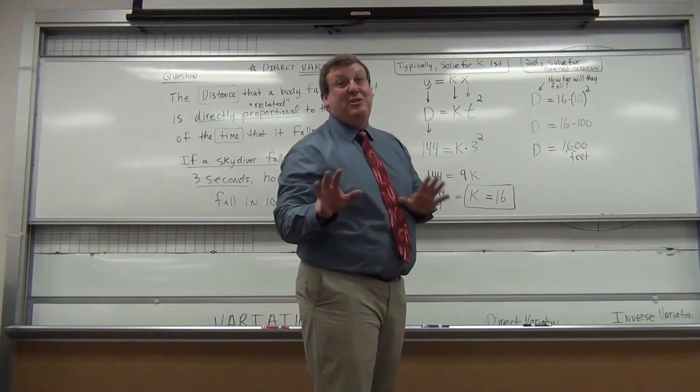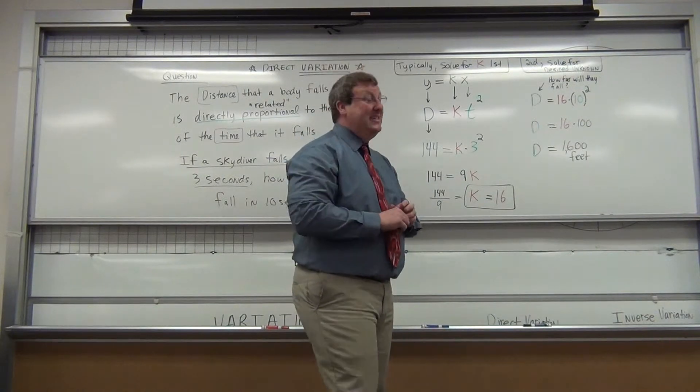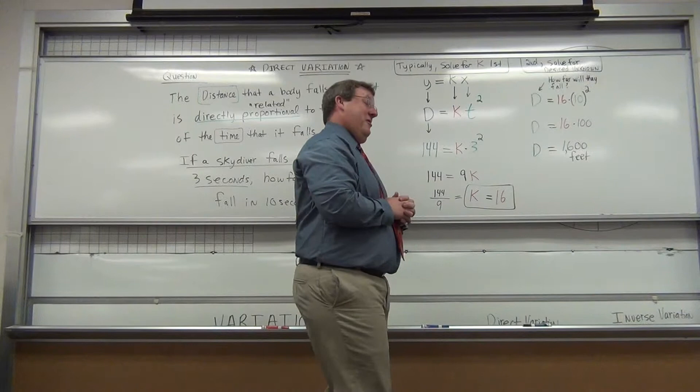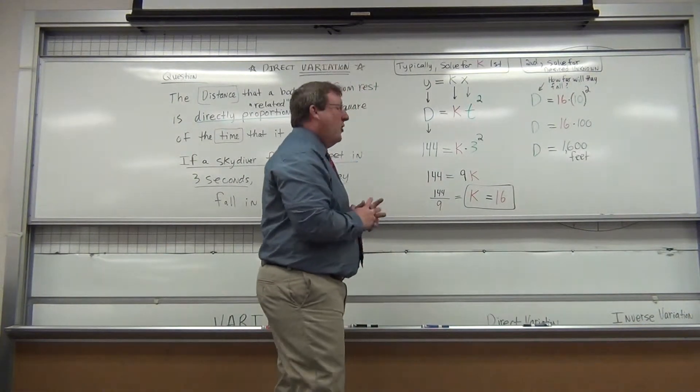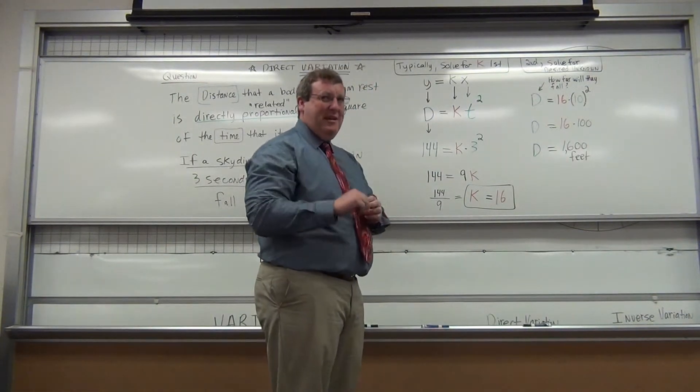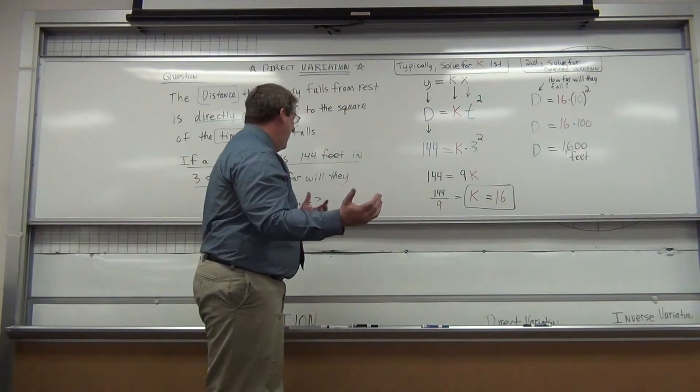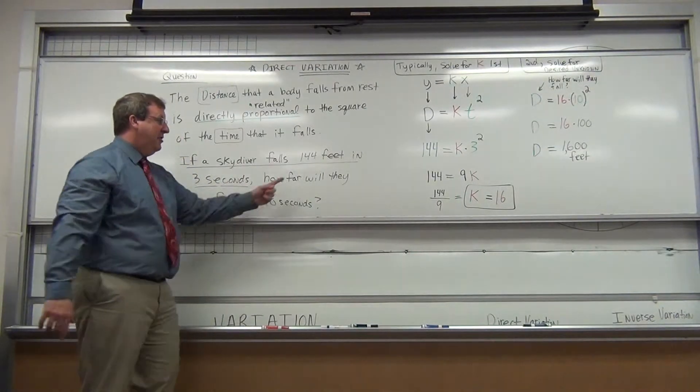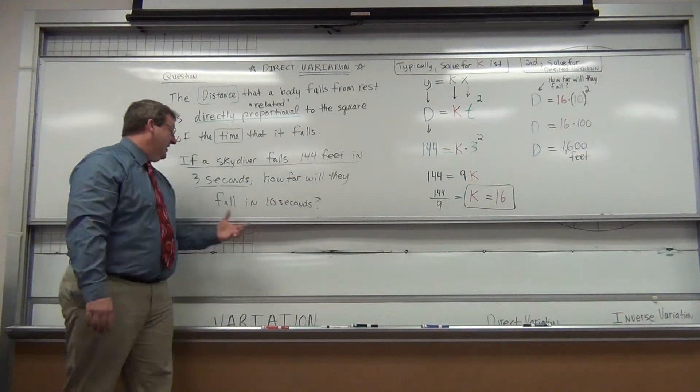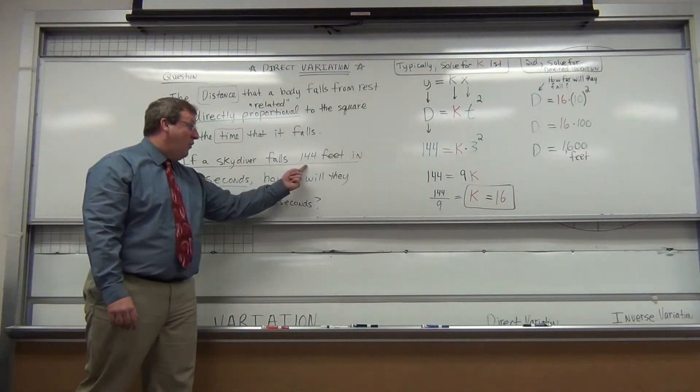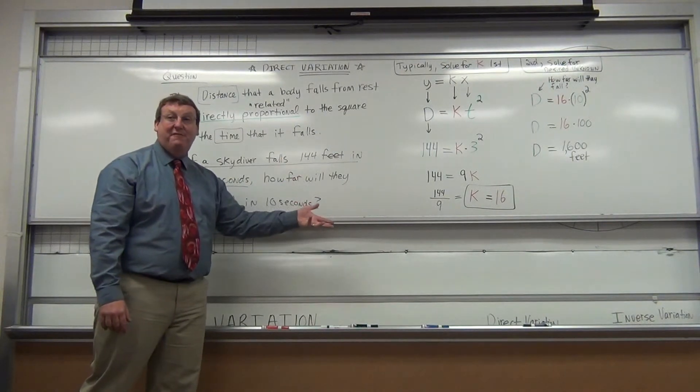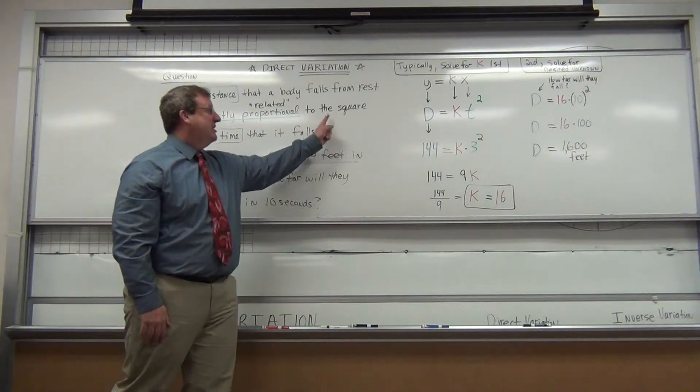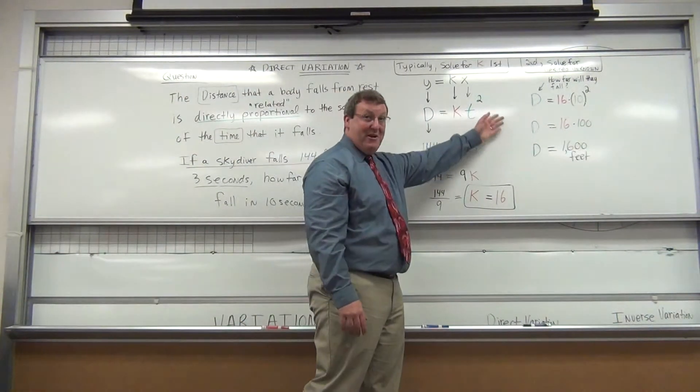Just for reference, 5,280 feet is a mile. So 1,600 feet is a little less than a third of a mile. That's falling a lot in 10 seconds. What's one common mistake people make? Some of my best students look at this and say, in 3 seconds it's 144 feet, so in 6 seconds I will go twice as much to 288 feet. This is not a linear relationship. It's a squared relationship. So be very careful.